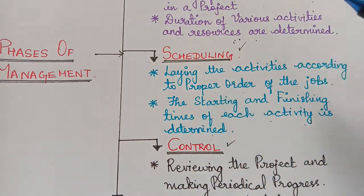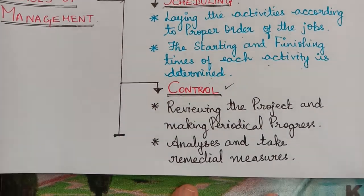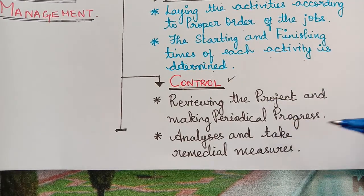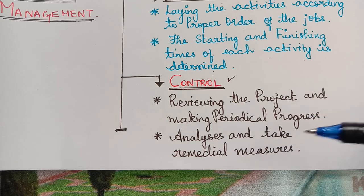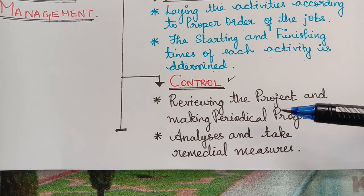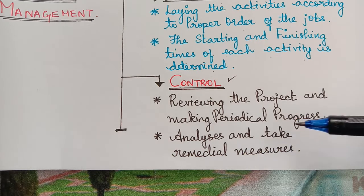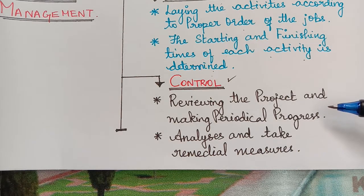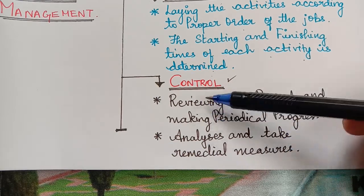Then comes the Control phase of the project. Under Control, reviewing the project and making periodical progress assessments take place — that is, how far the project has proceeded. The project is also analyzed and remedial measures are taken, such as identifying what is lacking and how fast the project needs to move forward.